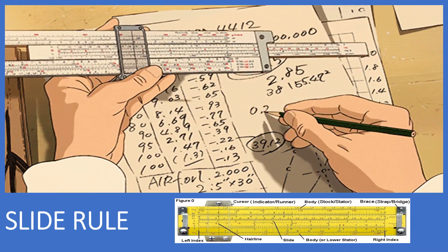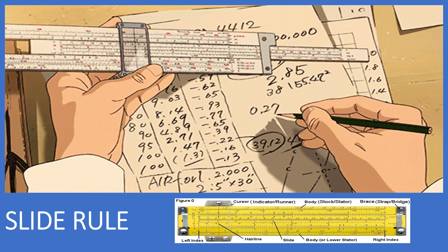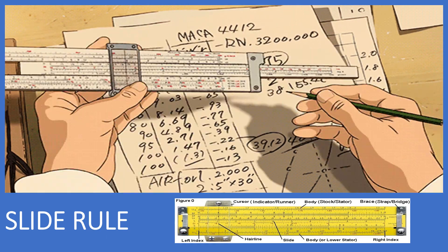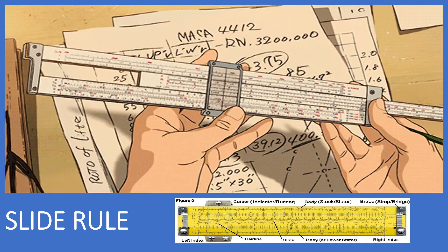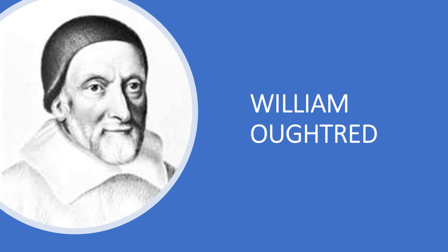The descendant of the abacus is the slide rule. The slide rule is a mechanical analog computer, used mainly for multiplication and division. William Oughtred is credited as the inventor of the slide rule in 1622. He used two scales sliding by one another to perform direct multiplication and division.